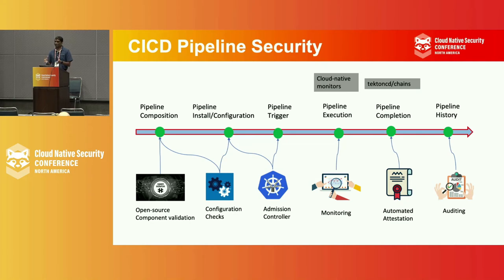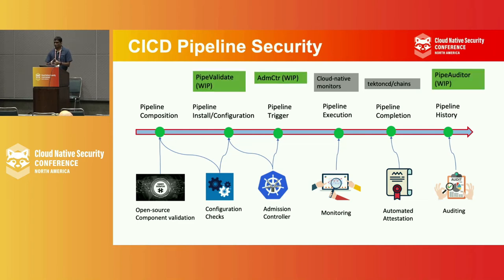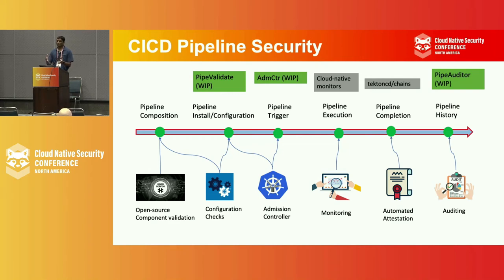I also put in a Tekton extension protocol proposal to extend this capability to the pipeline run, so we can have end-to-end provenance collection. One thing I'm looking into is PipeValidate — just like containers and Kubernetes have their own CIS benchmarks providing guidelines on how to configure your cluster and workloads, we are trying to come up with a set of guidelines for how you can configure your pipelines and identify misconfigurations. These will be codified and actionable, not just guidelines, so we can validate them through automation.